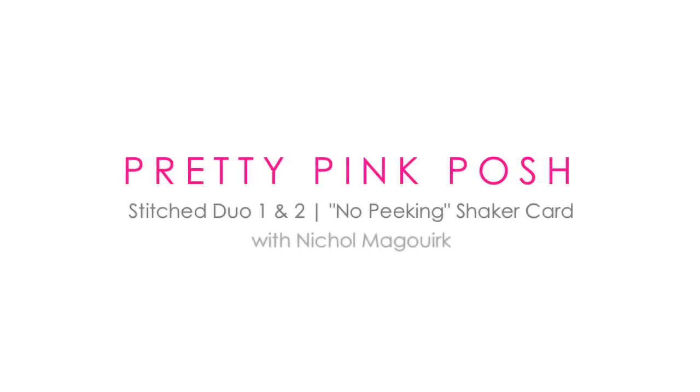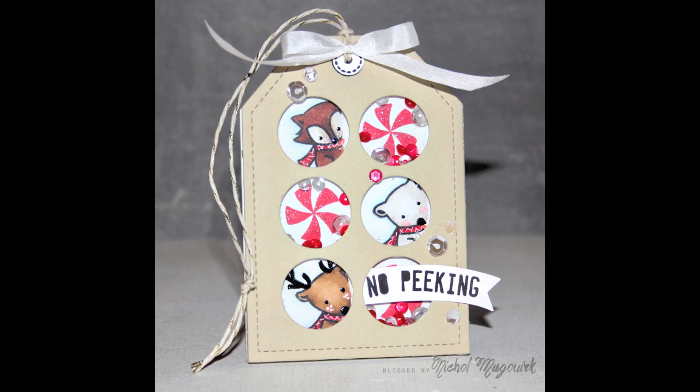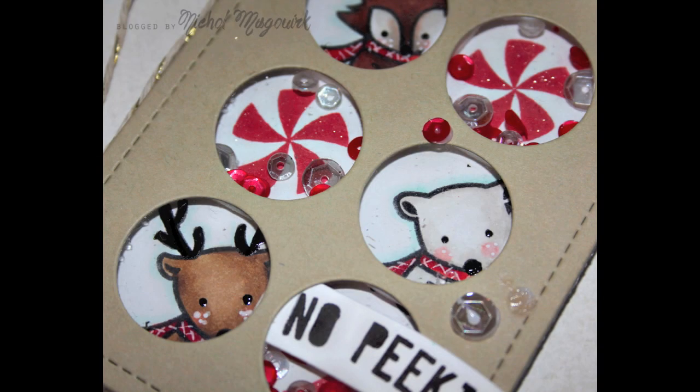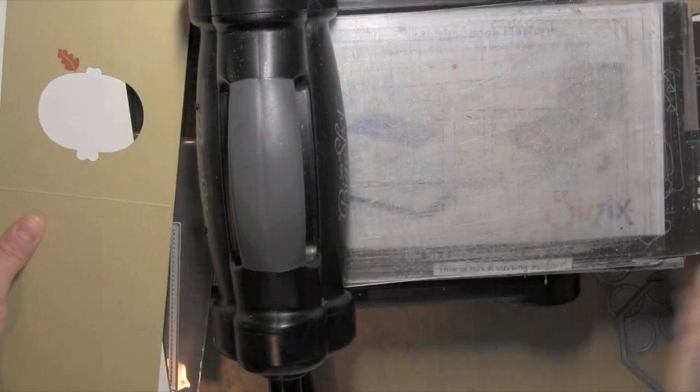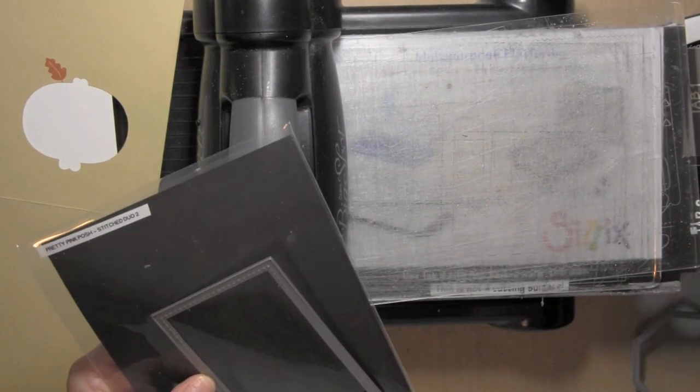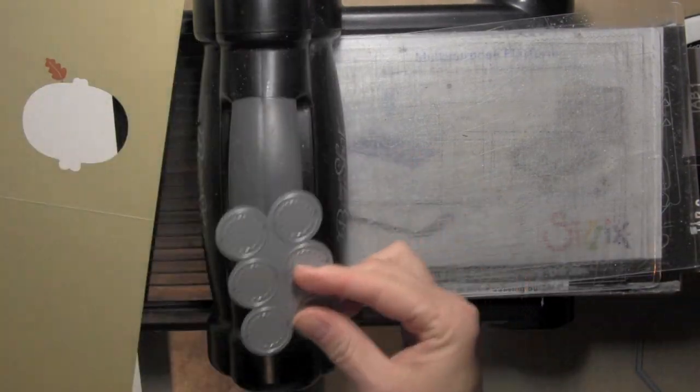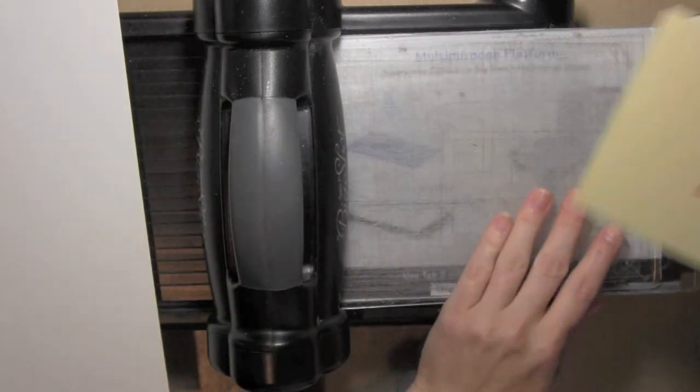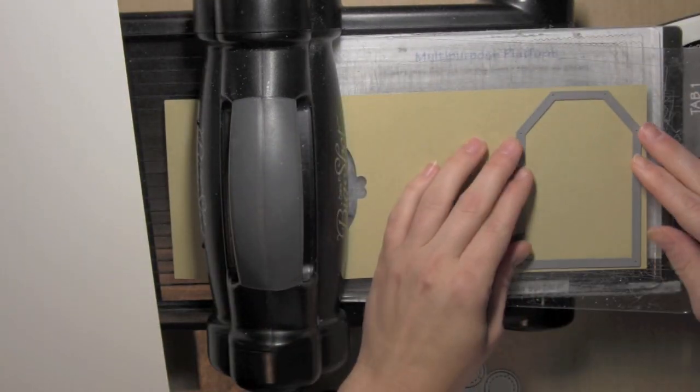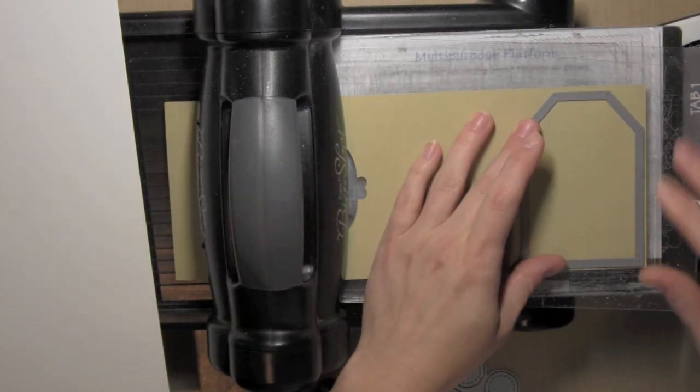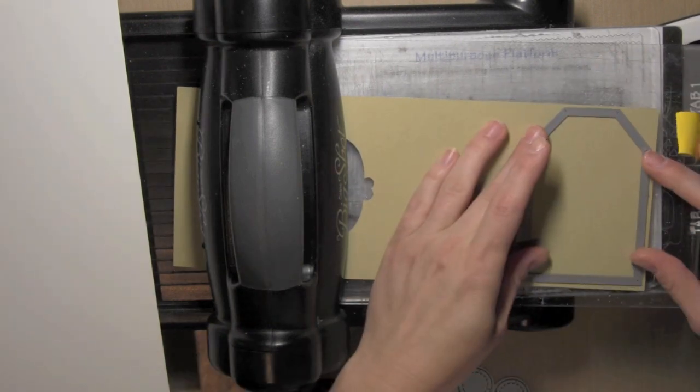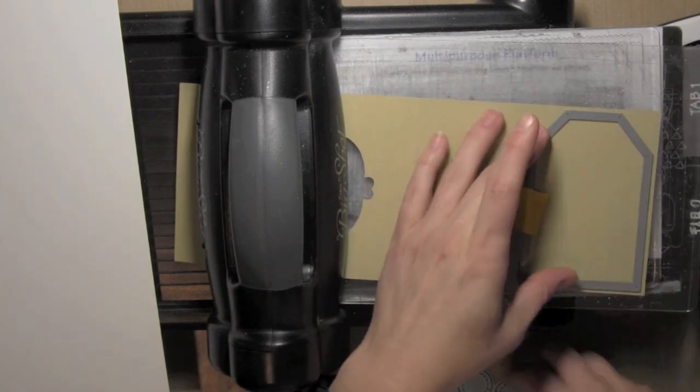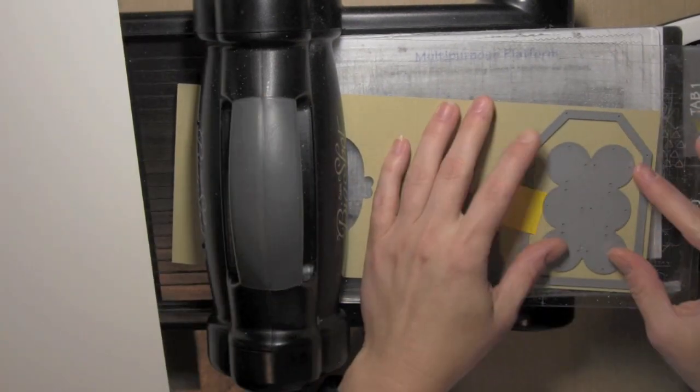Hi everyone, it's Nicole for Pretty Pink Posh and today I have a shaker tag to share with you featuring the brand new Stitched Duo 2 die, which is the inside circle cut out portion you see here. I have used it today instead of with the stitched rectangle that it comes with, instead with the stitched tag from the Stitched Duo 1 die collection. I love that you can mix and match these dies to work with one another.